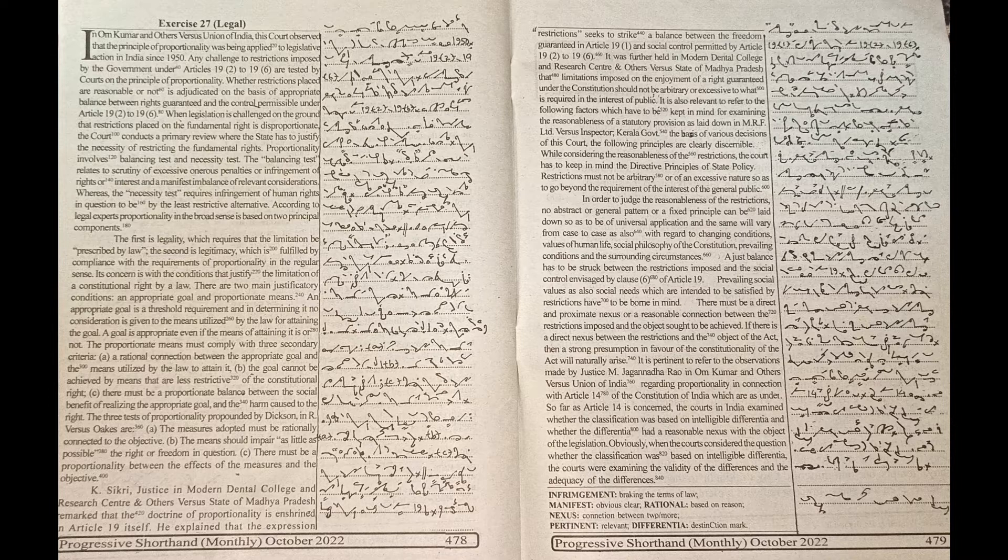It is pertinent to refer to the observations made by Justice M. Jagannatha Rao in Om Kumar and Others versus Union of India regarding proportionality in connection with Article 14 of the Constitution of India which are as under. So far as Article 14 is concerned, the courts in India examined whether the classification was based on intelligible differentia